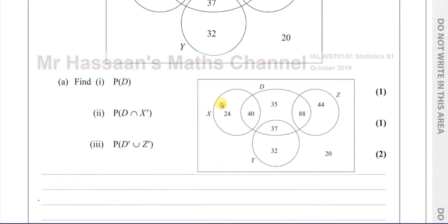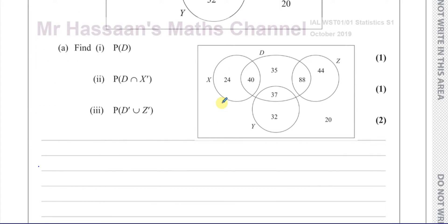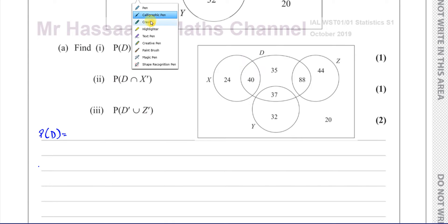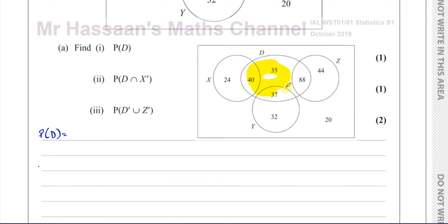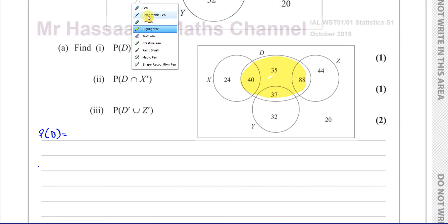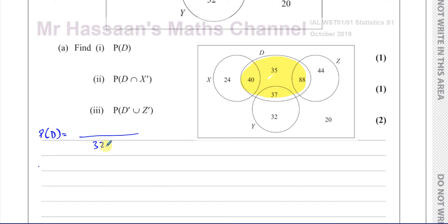First of all, it says find the probability of D. The probability of D means the probability that the house has a driveway — basically the probability of all values in circle D divided by the total, which is 320. So that's going to be over 320: you're going to have 40 plus 35 plus 88 plus 37. That's 75 plus 125, which is 200. So you have 200 over 320.